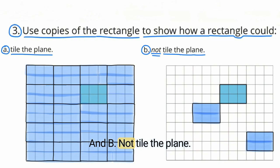And B, not tile the plane. So when you don't tile the plane, you leave gaps and you leave spaces. This is just one example. You can leave your gaps and spaces wherever you like.